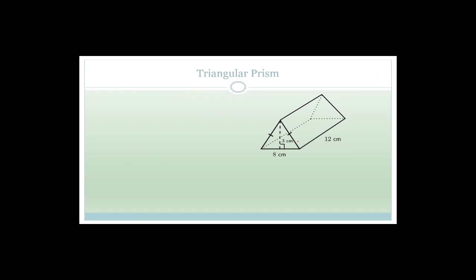Now let's look at this shape. It looks a little bit complicated because there's a triangle. But if you think of the triangle as the bottom of the prism, do you agree that would be a 90-degree angle? So again, we use area of the base times the height. The bottom is going to be the area of a triangle.